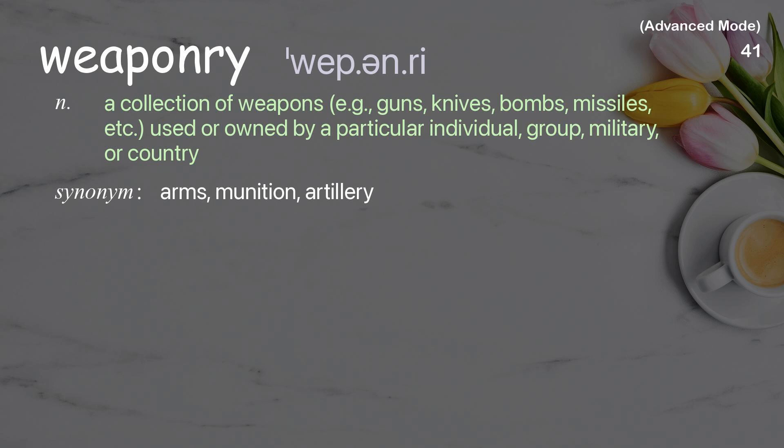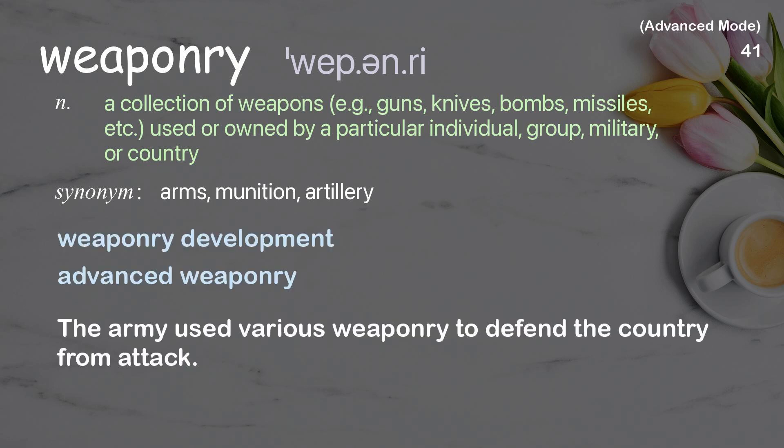Weaponry: a collection of weapons — such as guns, knives, bombs, missiles, etc. — used or owned by a particular individual, group, military, or country. The army used various weaponry to defend the country from attack.